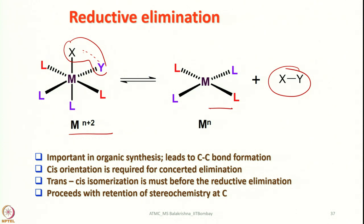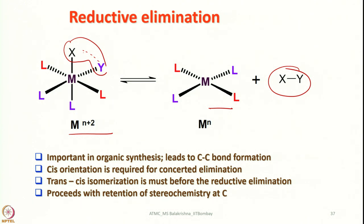Reductive elimination is very important in organic synthesis, especially in cross-coupling reactions. CIS orientation is required for concerted elimination — the two leaving groups must be CIS to each other on the metal center. Whether the prior step was concerted addition or nucleophilic addition, reductive elimination is always a concerted, three-center process. In cases where the two groups end up in trans positions, isomerization from trans to CIS must occur prior to reductive elimination. The process always proceeds with retention of stereochemistry at carbon.